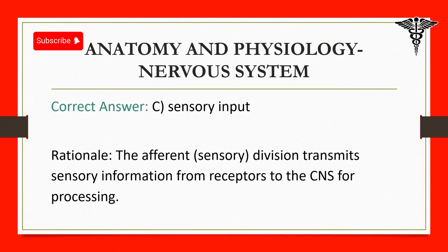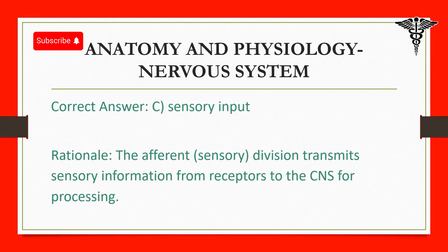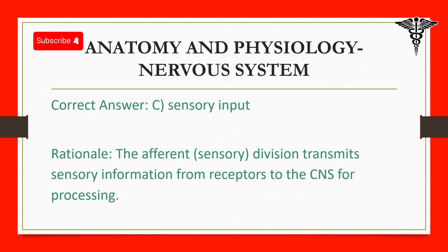Correct answer: C. Sensory input. Rationale: The afferent (sensory) division transmits sensory information from receptors to the CNS for processing.